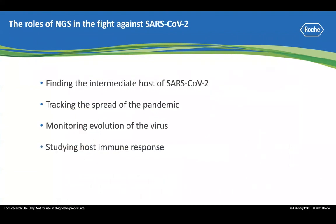Since its emergence in late 2019, SARS-CoV-2 has spread to over 200 countries, caused more than 2 million human deaths, as well as enormous economic hardship. Because this virus can also transmit asymptomatically, containing it is very challenging. NGS has been playing a critical role in our fight against this pandemic, such as finding the intermediate host of SARS-CoV-2, tracking the spread of the pandemic, monitoring viral evolution, as well as studying the host immune response. I will briefly go over each one of those applications.